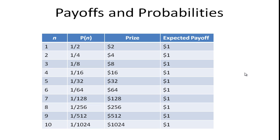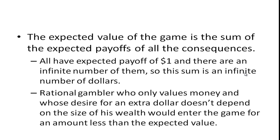If we continued this out to 50, 100, or a thousand periods, the expected payoff would still be a dollar for each toss. They all have the same expected payoff. The expected value of the game is the sum of the expected payoffs of all possible consequences, and there are an infinite number of these one-dollar payoffs. So the expected value is an infinite number of dollars.